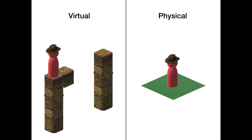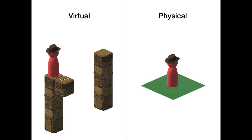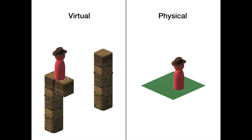If we instead position the moving platform to the side, it goes like this: you sidestep onto the platform, it moves, and you sidestep onto the next pillar. Since you took a step right and then left, you're back where you started in the center of your play area.